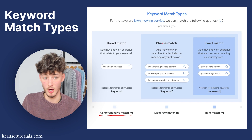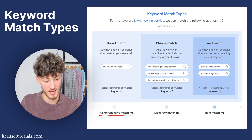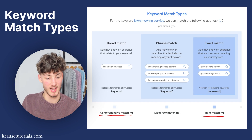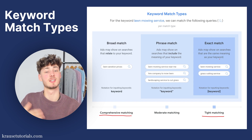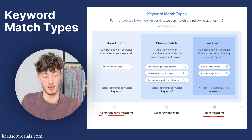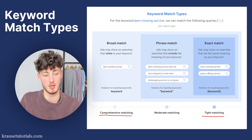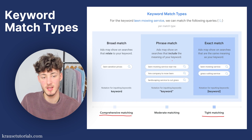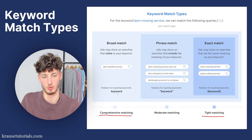The most powerful match type is exact match with tight matching — it only shows up for searches that are the same or have the exact same meaning, like 'lawn mowing services' and 'grass cutting services.' To use exact match, wrap your keyword in brackets; for phrase match, use quotation marks; and for broad match, just enter it naturally.